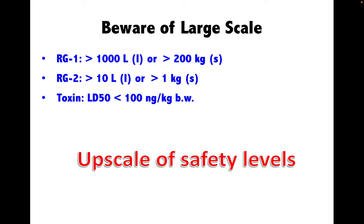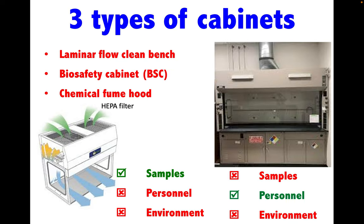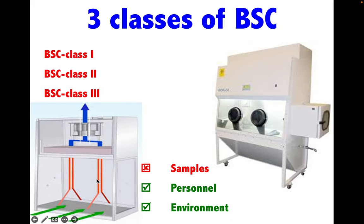To work safely under safety containment, the safety cabinet has been designed and classified into three main types: the laminar flow clean bench, the biosafety cabinet or BSC, and the chemical fume hood. The chemical fume hood works to protect the person from volatile chemicals, but is designed to protect neither the environment nor the sample. In the case of the laminar flow clean bench, although sterile air passes through a HEPA filter down to the working area, the person and the environment are not protected — only the sample is protected.